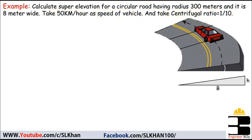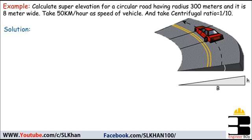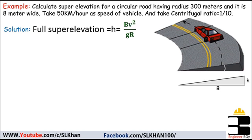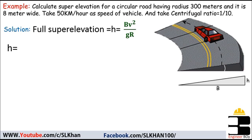The given data is enough to calculate the value of full super elevation. In the solution, our approach is to work out super elevation using h equals bv squared divided by gr. The data and formula are given, so the only thing we have to do is plug and chug into that formula.